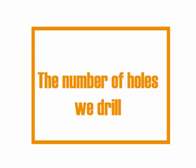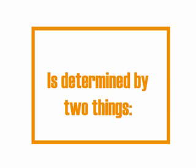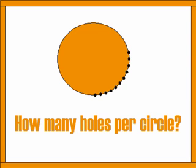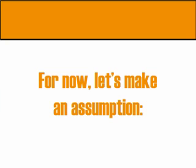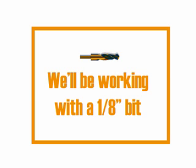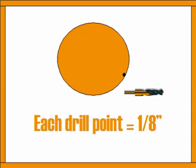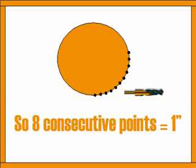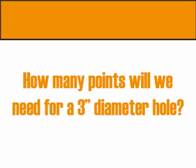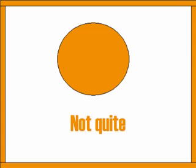The number of holes we drill is determined by two things: the size of each hole and how many holes we need per circle. For now, let's assume we'll be working with a one-eighth inch drill bit — that's arbitrary, we're just assuming that going in. So each drill point is one-eighth of an inch, meaning eight consecutive drill points will give us a one-inch cut.